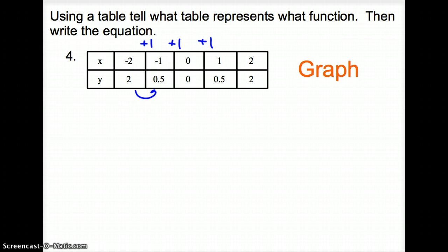Now, how do we get from 2 to 0.5? We are subtracting 1.5. Okay, that's interesting. How do we get from 0.5 to 0? We're subtracting just 0.5 this time. How do we get from 0 to 0.5? Now, we are adding 0.5. And how do we get from 0.5 to 2? We are adding 1.5. So far, they're not consistent, so we know it's not linear.